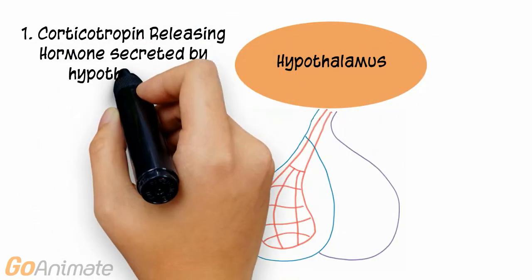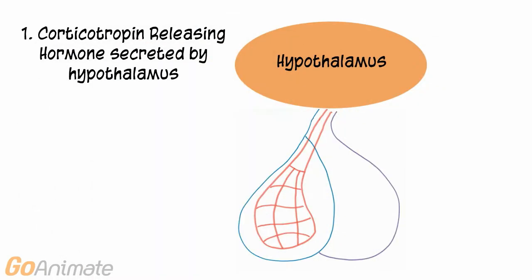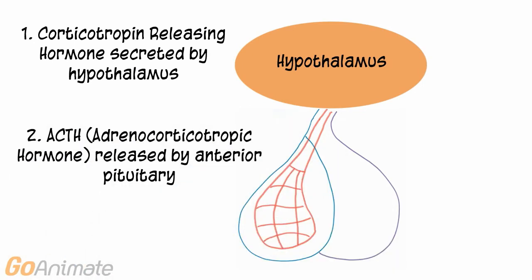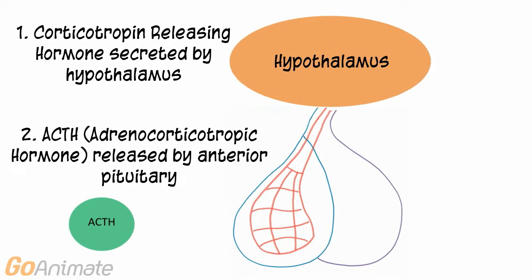In the case of ACTH, the hypothalamus first releases corticotropin releasing hormone, or CRH. CRH travels to the anterior pituitary gland by way of the blood vessel network. The anterior pituitary responds by secreting ACTH.